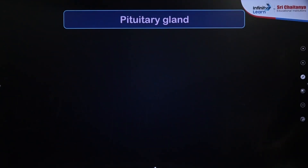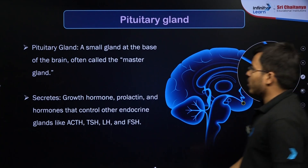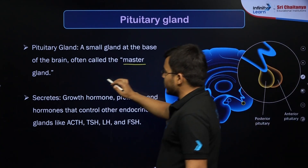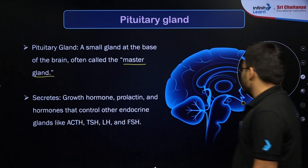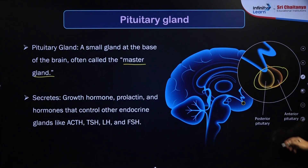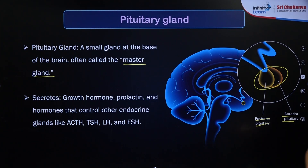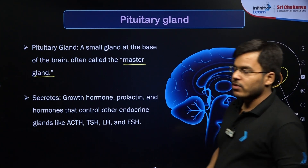Next is the pituitary gland, the master gland of the body, situated just below the hypothalamus. If you see those two bulb-like structures, those are the pituitary gland. It has two main parts: the posterior pituitary and the anterior pituitary. The posterior pituitary releases two hormones, while the anterior pituitary releases several hormones that are physiologically very important.